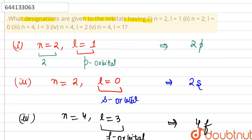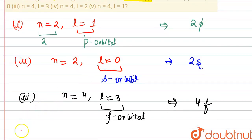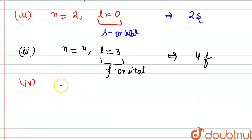Now in the fourth one, we are provided with n value 4, l as 2. For l value 2, we are having d orbital, d sub-shell is there, and n is 4, that means it is 4d orbital.